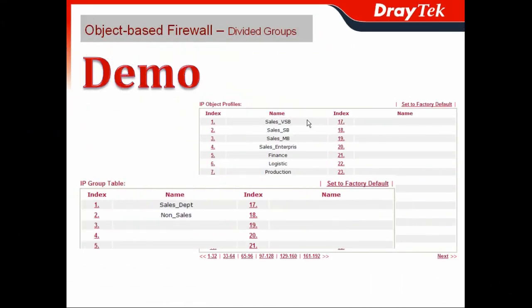Following my introduction, you can use the Vigor 2830 series to create IP objects as shown right here. Then I would like to regroup these different workgroups into IP groups, such as SalesDepartment and Non-Sales. Generally speaking, network administrators do not want to create overly complicated firewall rules, so they may separate employees into Salespeople and Non-Salespeople using IP groups to regroup those different workgroups.